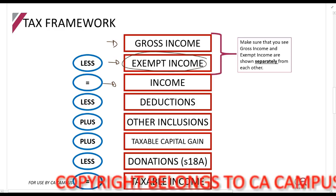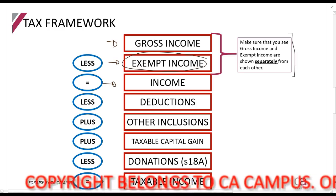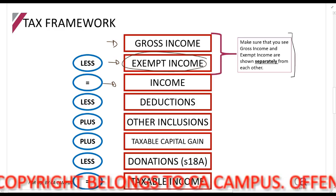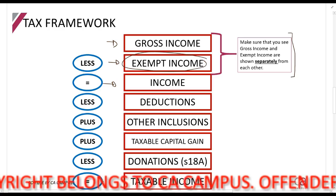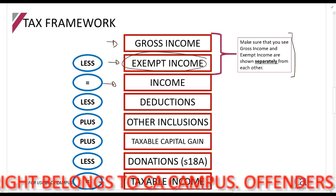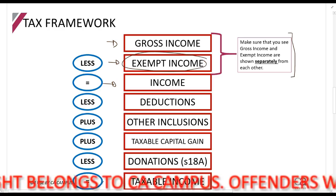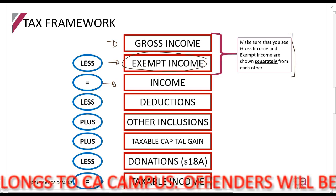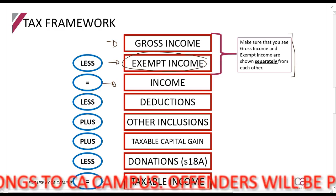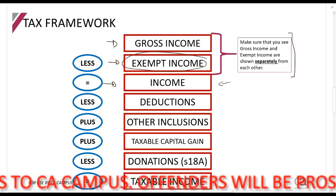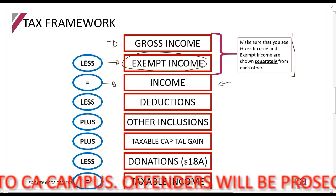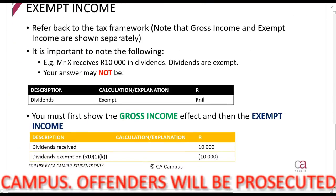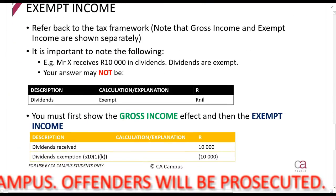It's very important, as we discussed on the gross income section, to make sure that gross income and exempt income are shown separately from each other. That means you don't just show income as a net effect. On the next slide it will be a little bit more apparent what I mean.